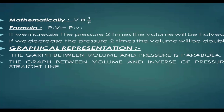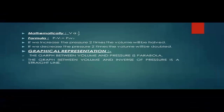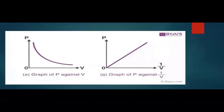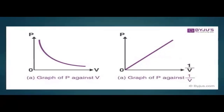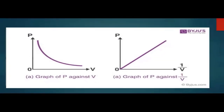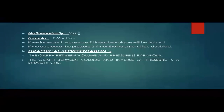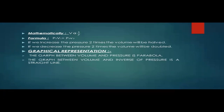Graphical representation: the graph between volume and pressure is a parabola. The graph between volume and the inverse of pressure is a straight line. If we plot volume against pressure, the graph is a parabola; if we plot volume against inverse of pressure, we get a straight line.